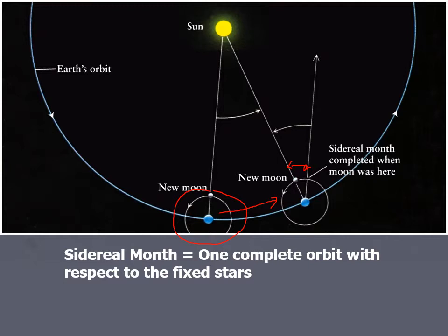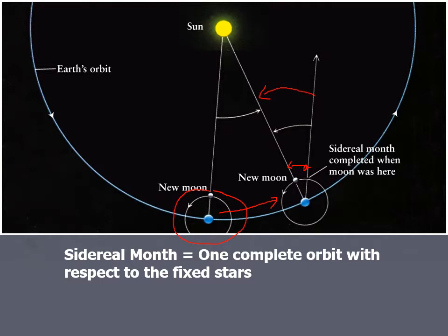But from new moon to new moon, or full moon to full moon, that's about 29 and a half days, because the moon has to move a little bit further in order to line up with the sun again. So there are several different kinds of motion happening here.